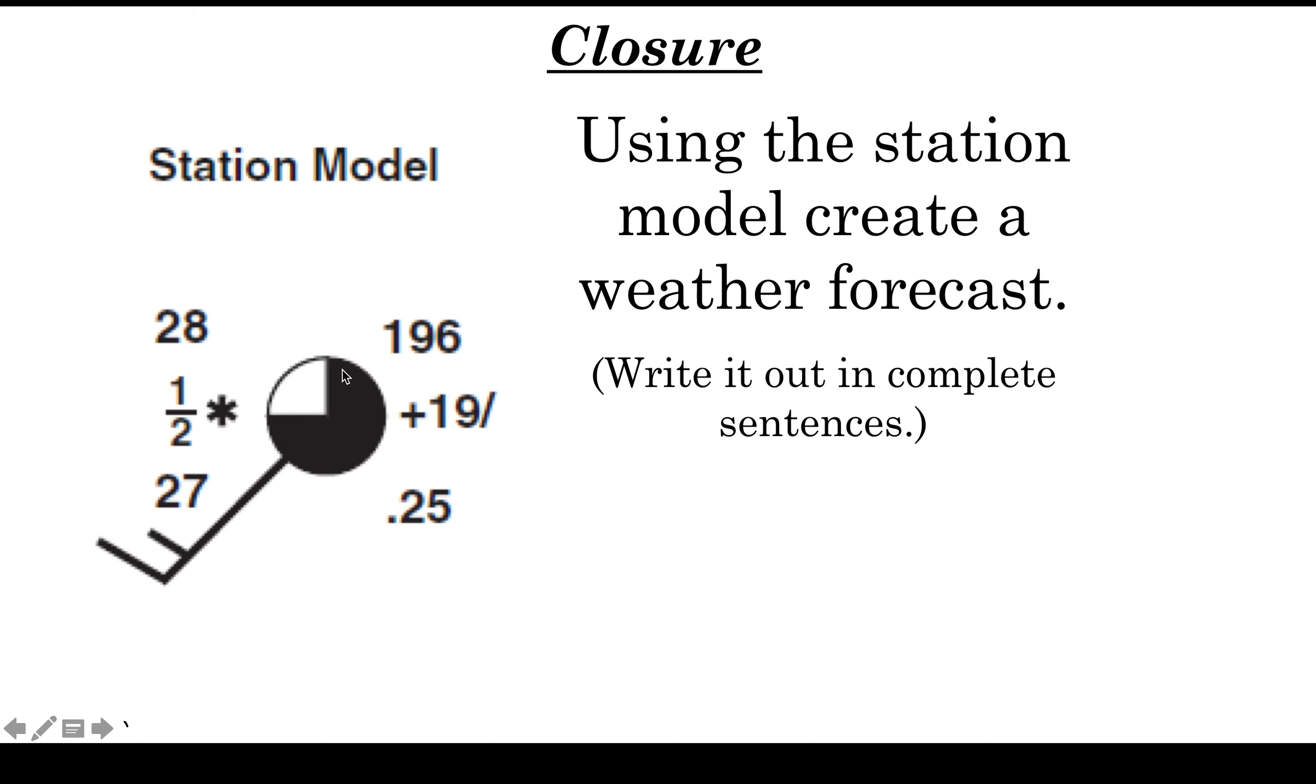So in closure, you can write out a few sentences, and some of the solutions are right here. But let's talk about it. I'm just going to start from the top left: air temperature is 28 degrees Fahrenheit. I can see the visibility is one half of a mile and it's snowing out. Dew point is 27 degrees. The winds are from the southwest at 15 knots.